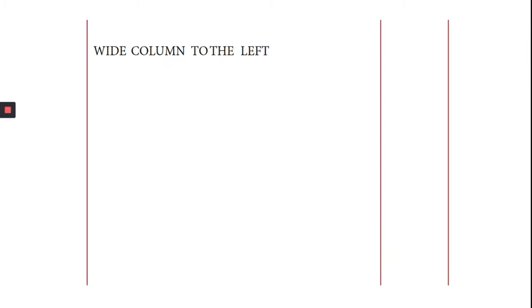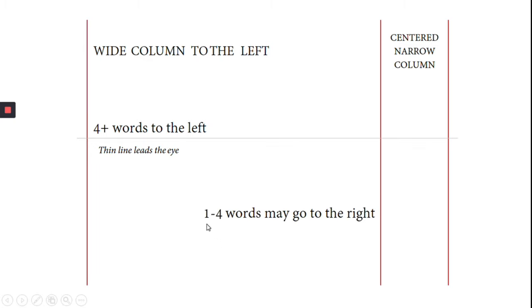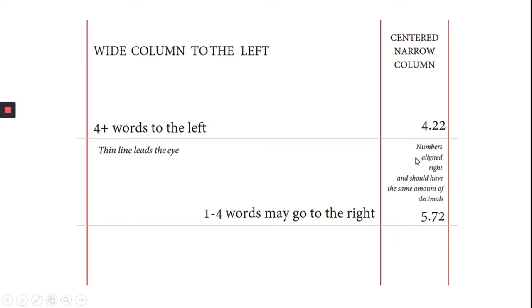So some rules you can follow while creating tables: if you have a really wide column, the text should go on the left. If you have a narrow column, you can center the text. If you have more than 4 words, they should go on the left, and use thin grey lines to guide the eye. If you have 4 words or less, they can go to the right because it produces eye movement. And as a rule, numbers should align to the right and they should have the same number of decimals.